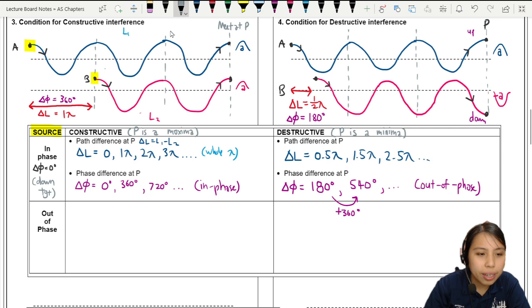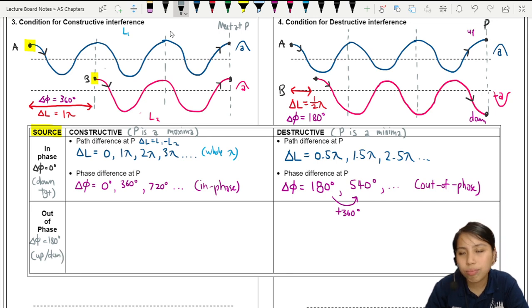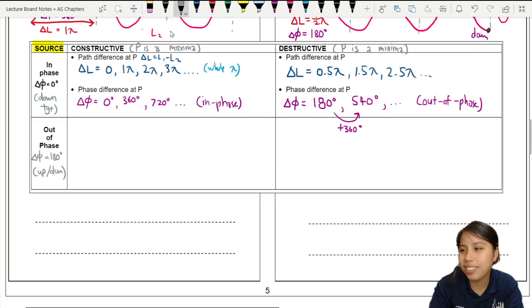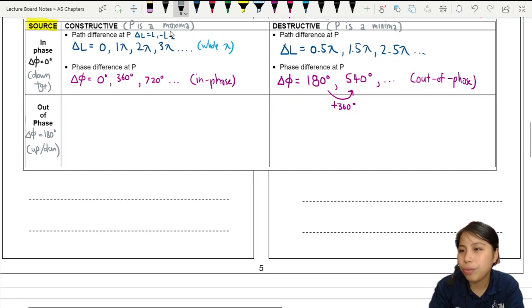So it can mean that your phase difference at the source is 180 degrees when the waves are created. So how would the waves look like in that extra scenario? Here is the bonus video.